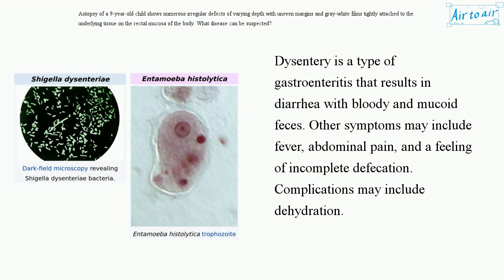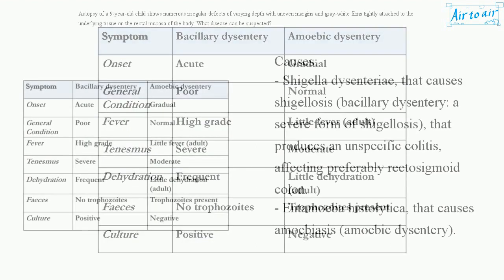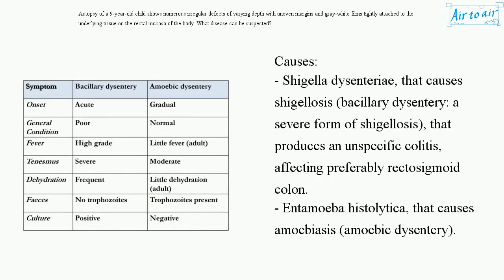Dysentery is a type of gastroenteritis that results in diarrhea with bloody and mucoid feces. Other symptoms may include fever, abdominal pain, and a feeling of incomplete defecation. Complications may include dehydration.